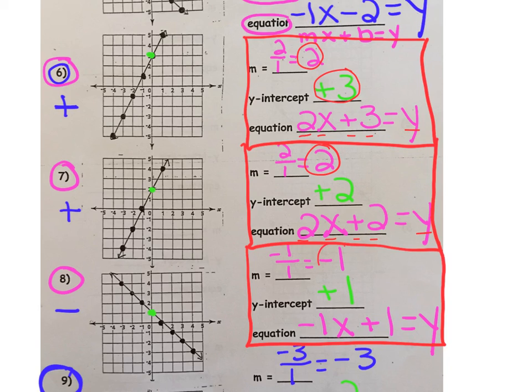And finally, for number eight, a negative one for your slope, a positive one for your intercept. And as an equation, negative one x plus one equals y.